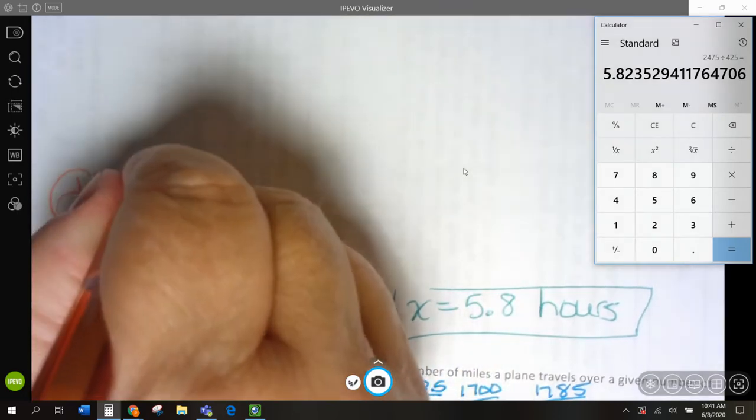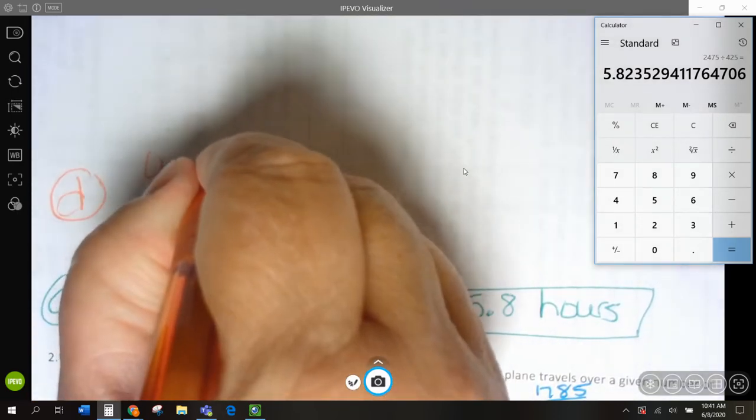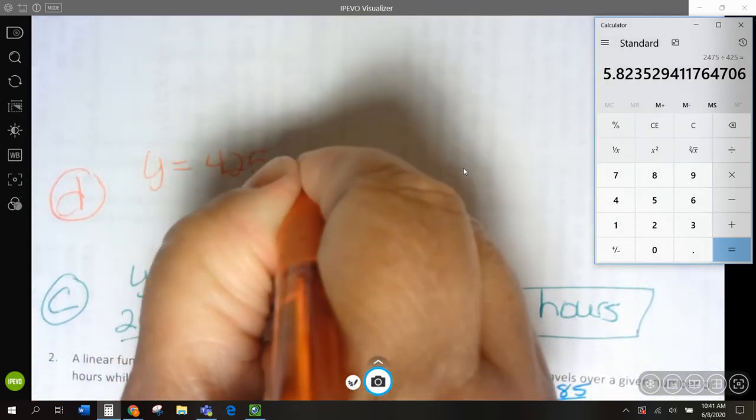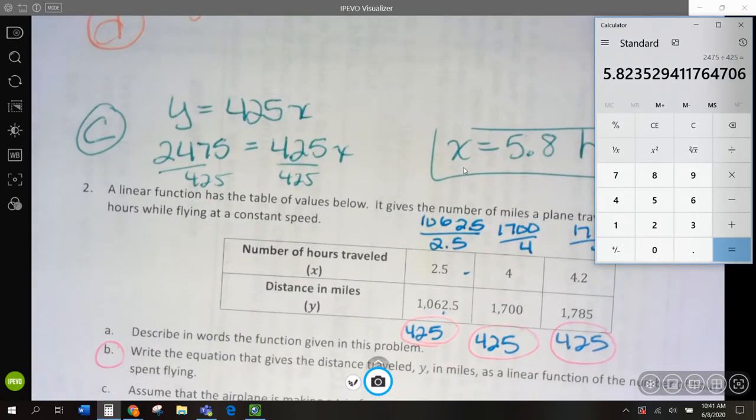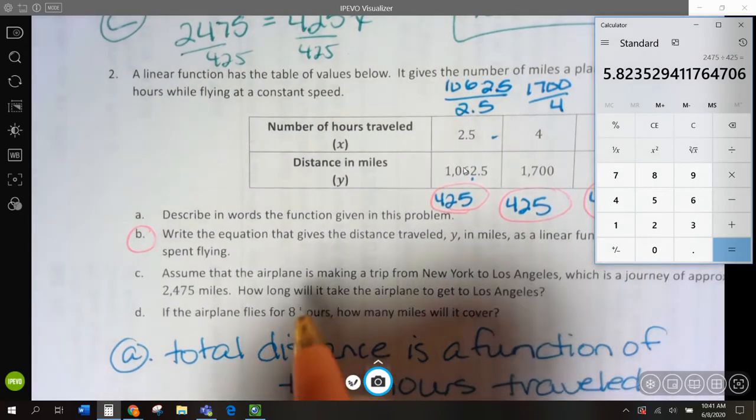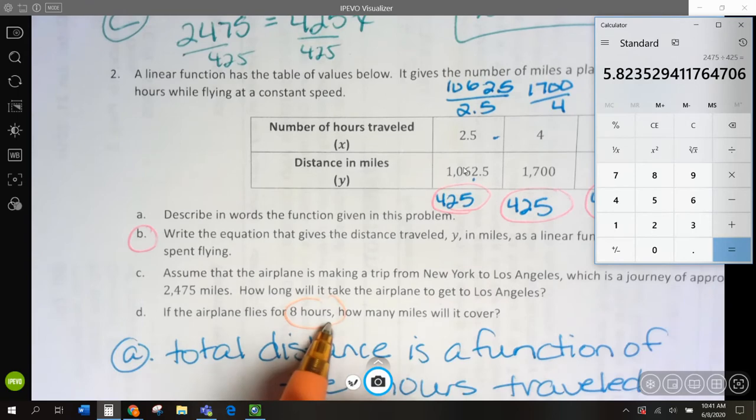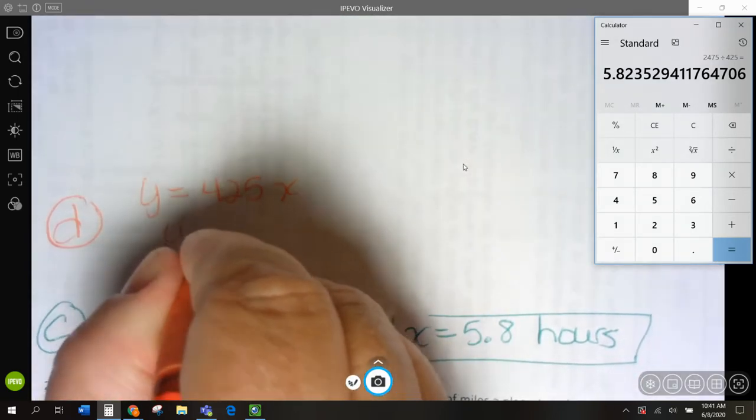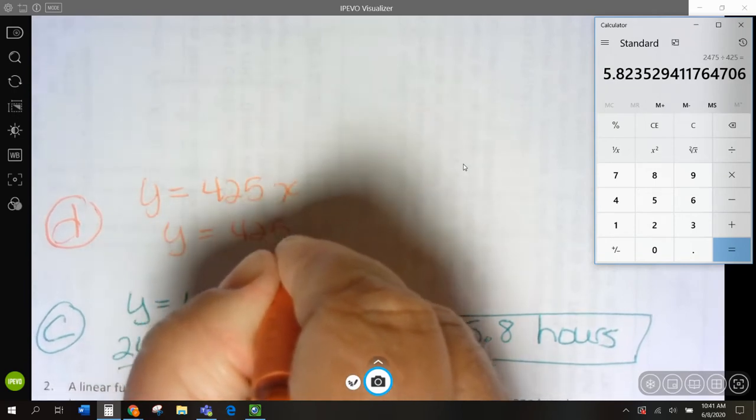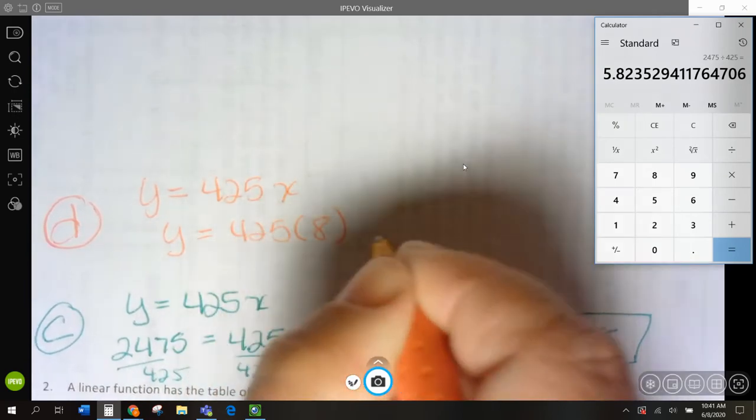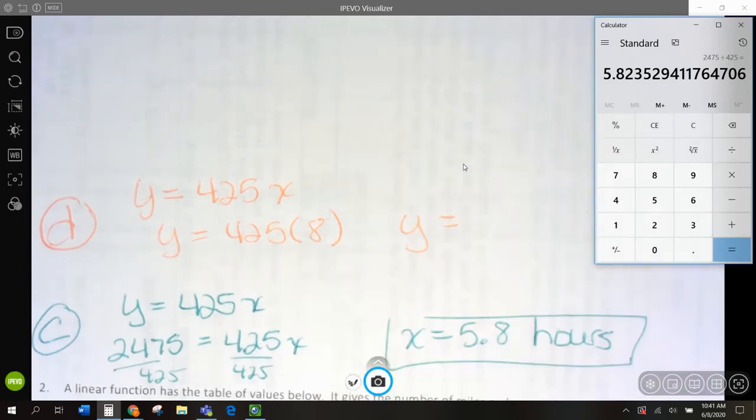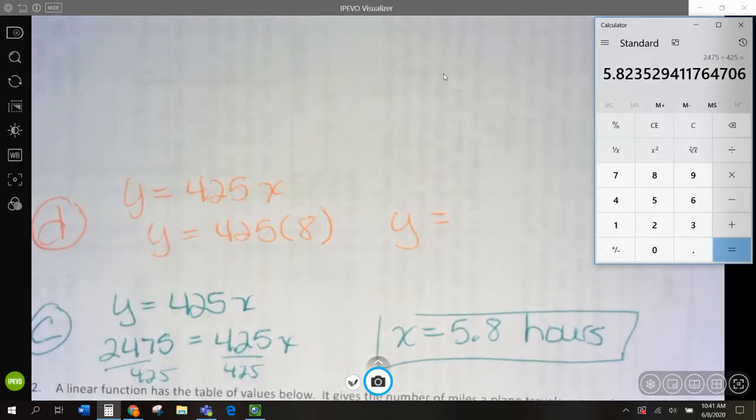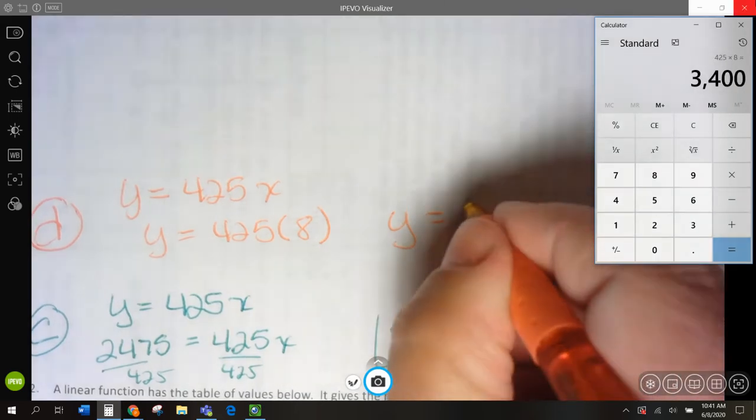If our equation equals y, total miles is 425 times every hour, and they're telling us that it flew for 8 hours, so that 8 hours is going to go into x, because that's the number of hours. So, y is going to be 425 times 8. So, y is going to be, let's do 425 times 8, 3,400 miles.